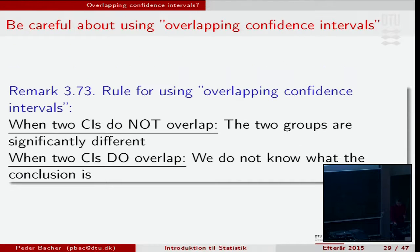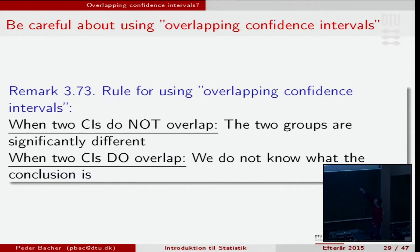Skip this slide and just jump to the thing you need to remember. If the two confidence intervals do not overlap, then you can be sure that the two groups are significantly different — so a null hypothesis of no difference would be rejected. If the confidence intervals do not overlap, we can conclude that they are significantly different.